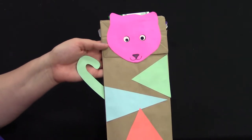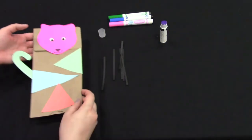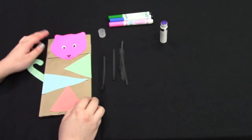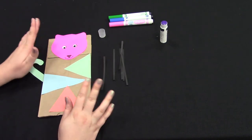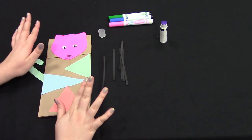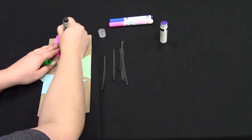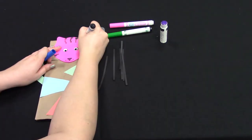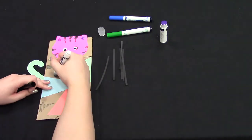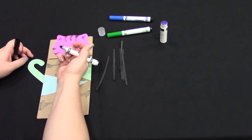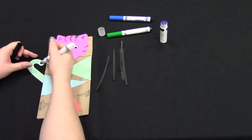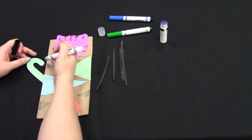Next, using your markers, you're going to color and design anything you want. I'm going to put some stripes on mine, maybe some little tufts of fur. We'll see what I come up with. I'm going to give him some stripes on his tail too, because why not? Tigers have stripes all over their bodies.